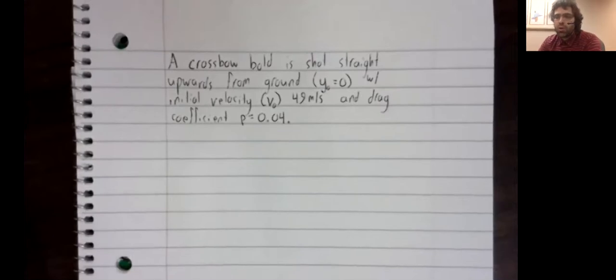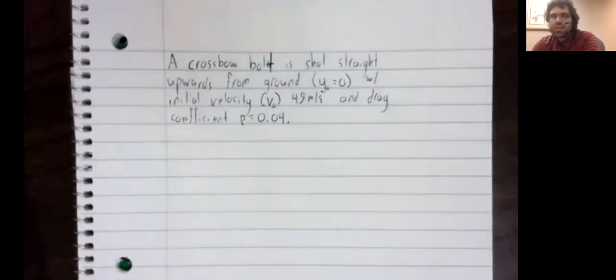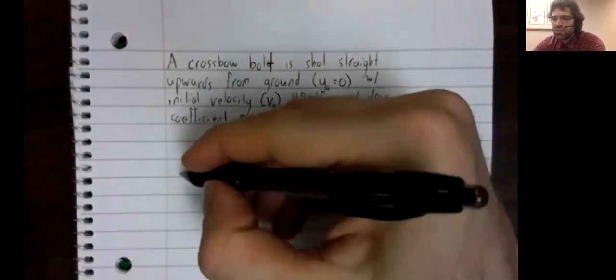A crossbow bolt is shot straight upwards from the ground with initial velocity 49 meters per second and drag coefficient rho equals 0.04. And let's compare velocity and position with and without air resistance.